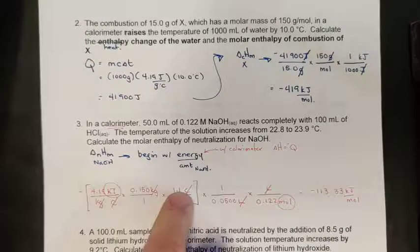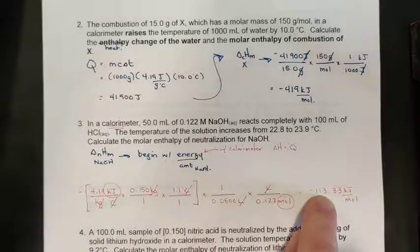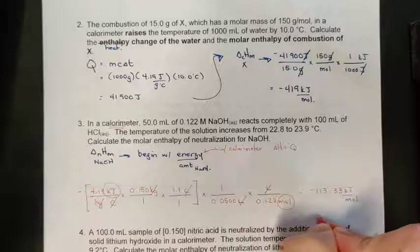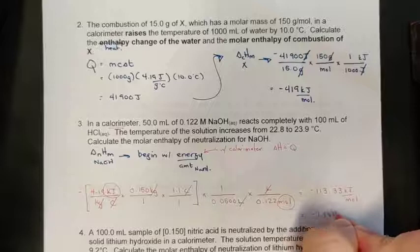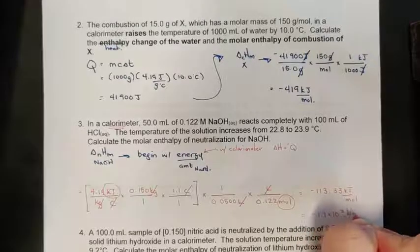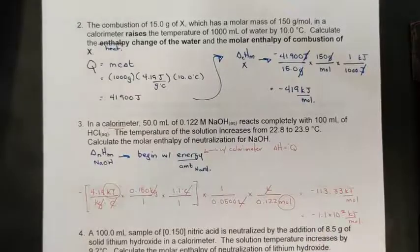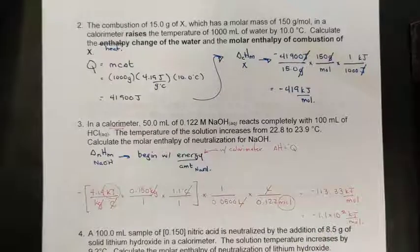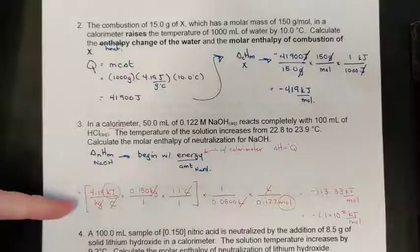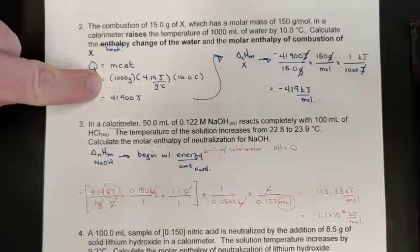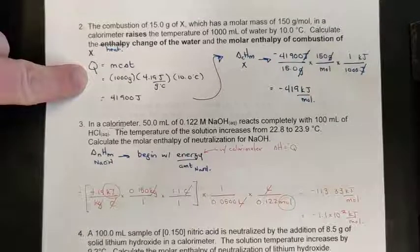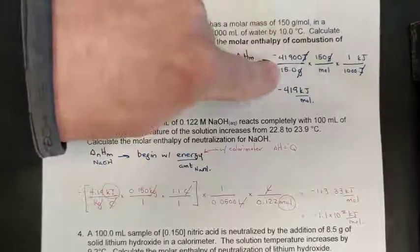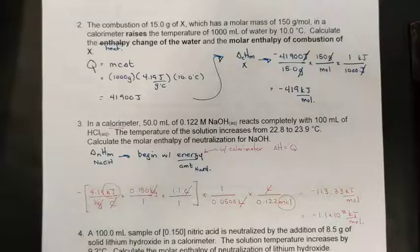Checking significant figures: three, three, two, three, and three digits in the values — so the answer rounds to two significant figures, expressed in scientific notation as negative 1.1 × 10² kilojoules per mole. Those are your first three examples. For those who prefer using mc∆T separately, calculate q first, then use it in the energy over amount setup to find molar enthalpy. Good luck — we'll continue the examples in the next video.